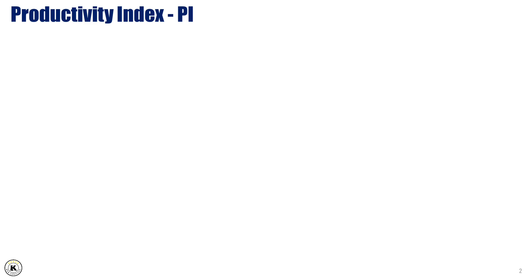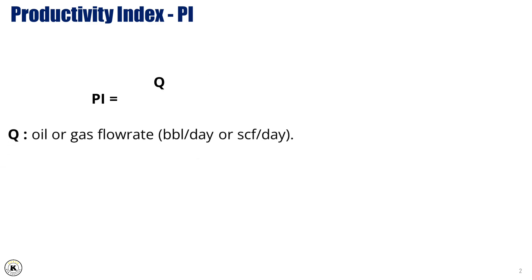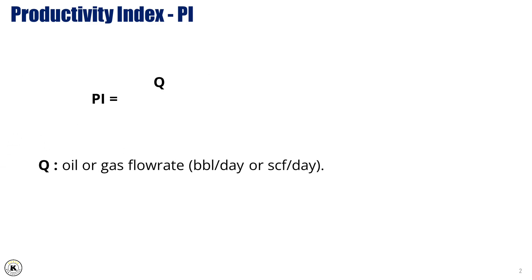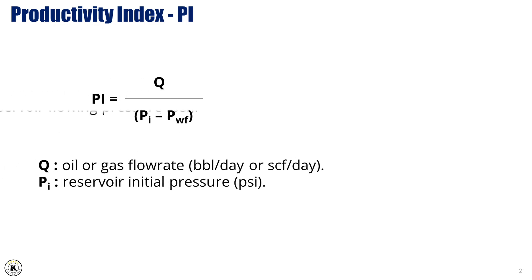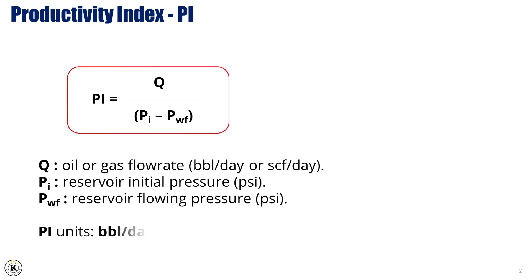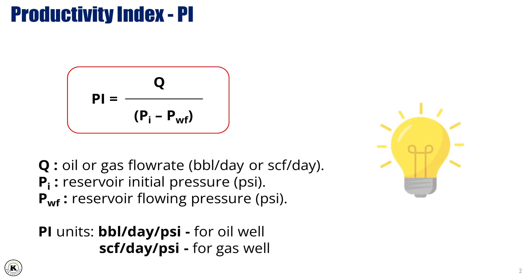Productivity index. The productivity index, PI, is equal to the oil or gas flow rate, Q, in barrels per day or standard cubic feet per day, divided by the difference between the reservoir initial pressure, PI, and the reservoir flowing pressure, PWF, in PSI. The unit of the productivity index is then barrels per day per PSI in the case of an oil well, or standard cubic feet per day per PSI.